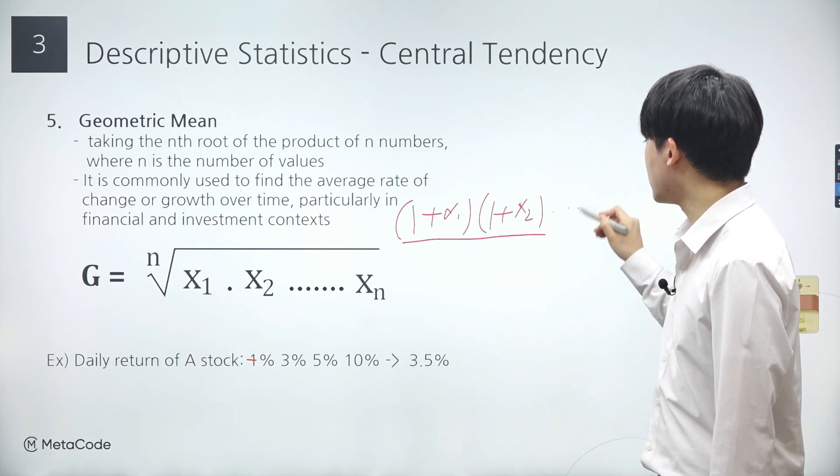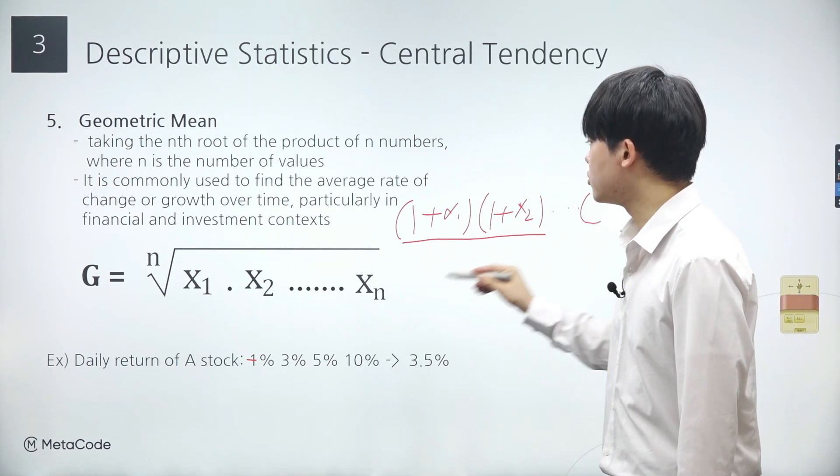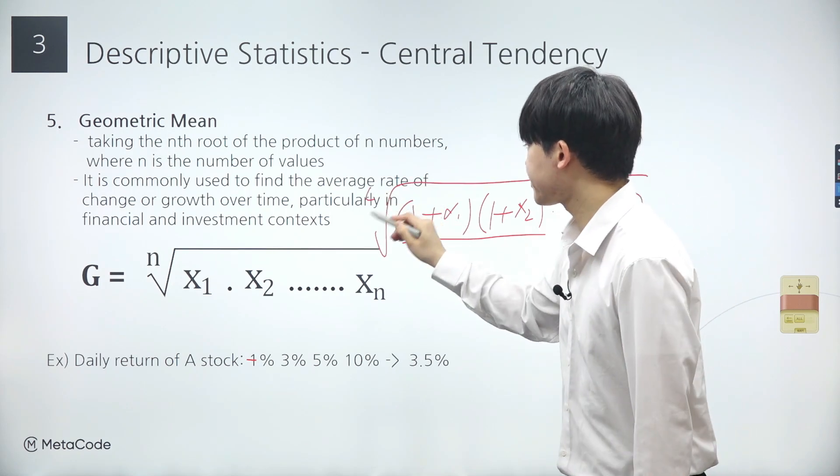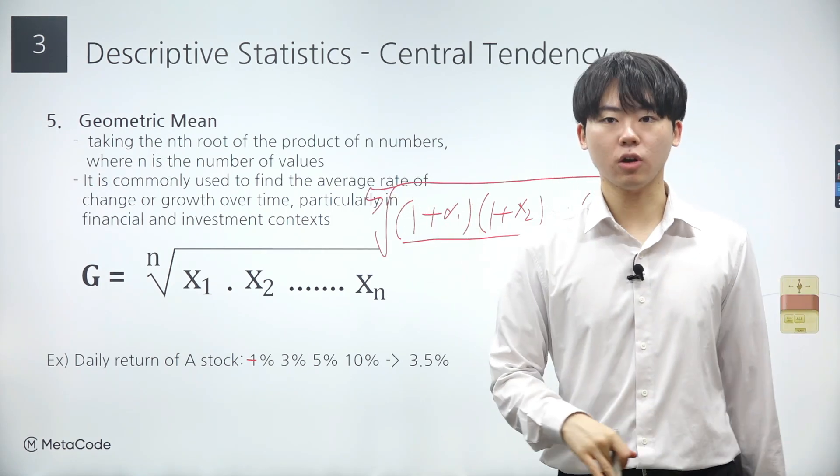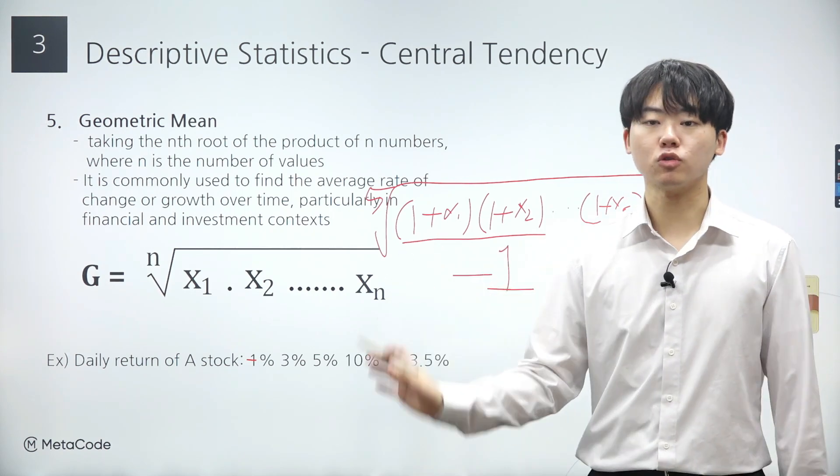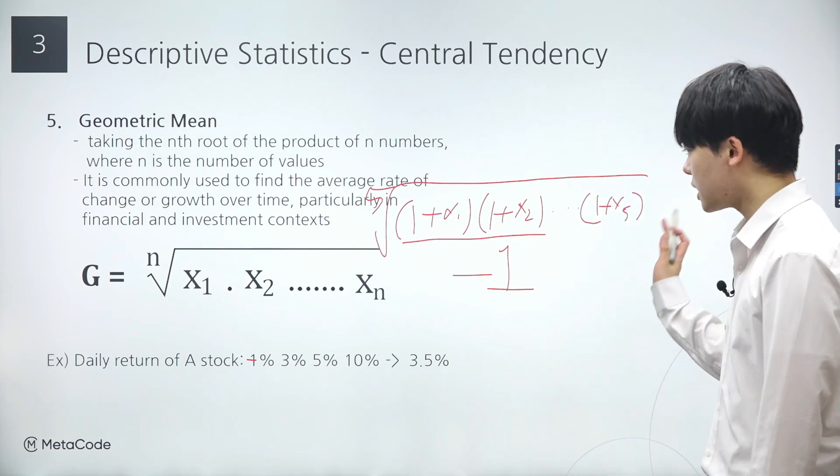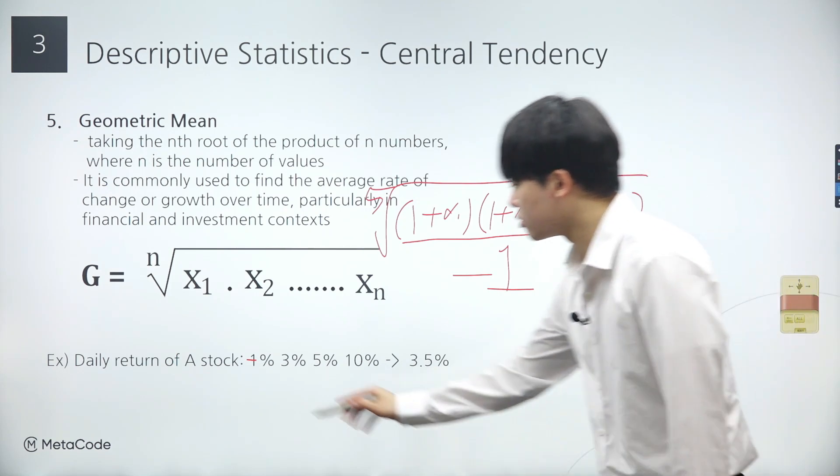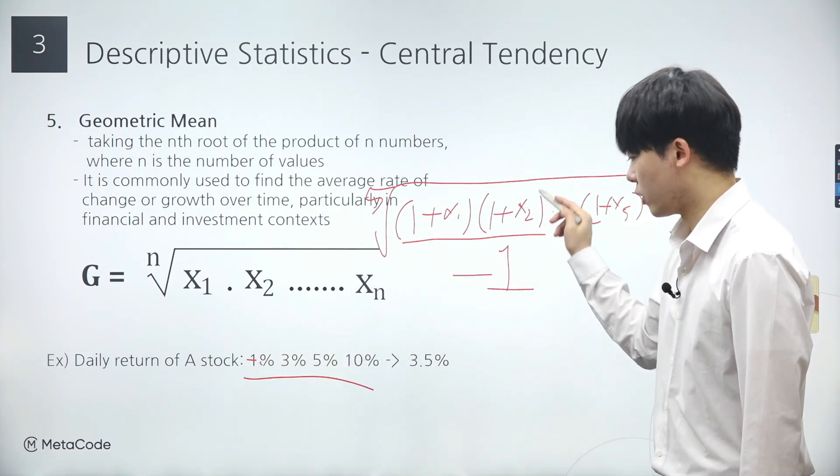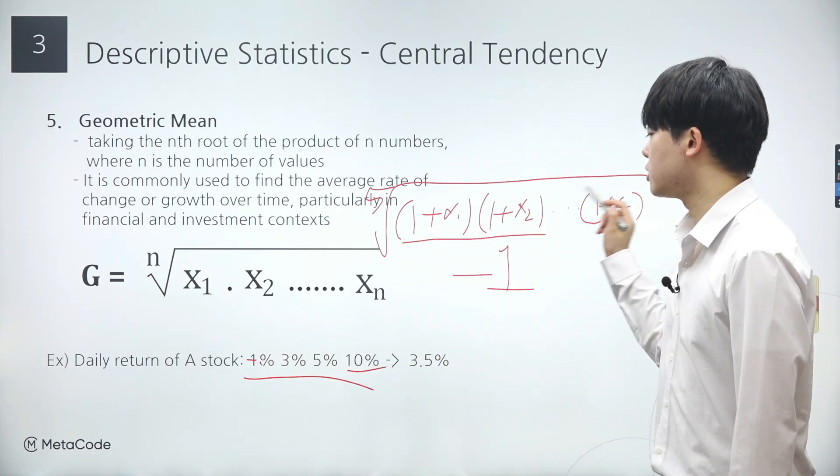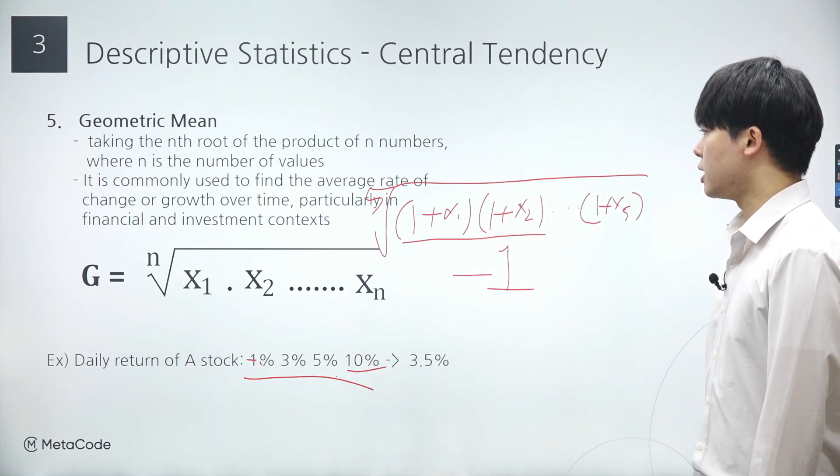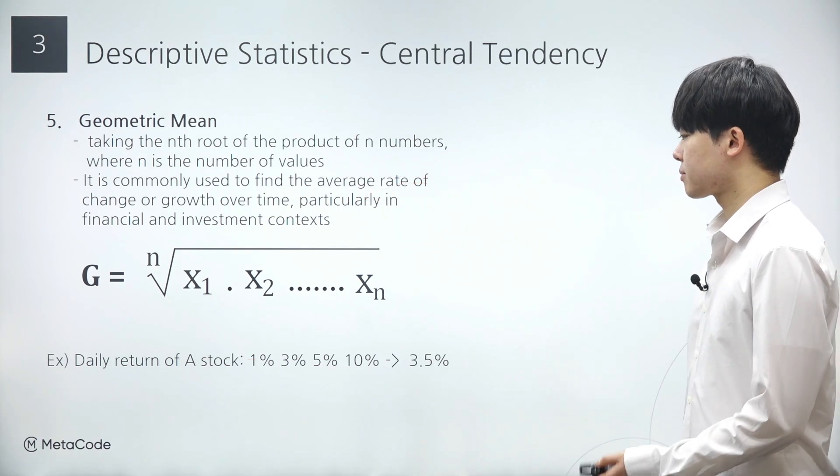Suppose we have 5 data points within a data set. We calculate the product of 1 plus x1 to 1 plus x5, and then take the fifth root of this product. After obtaining the fifth root, we subtract 1 to derive the proper geometric mean. It's worth noting that we subtract 1 outside the root, rather than subtracting 1 inside the root. So, when calculating the average return of a stock, each daily return value is incremented by 1. If a daily return is 1%, it becomes 1.01. Similarly, if a daily return is 10%, it becomes 1.1.